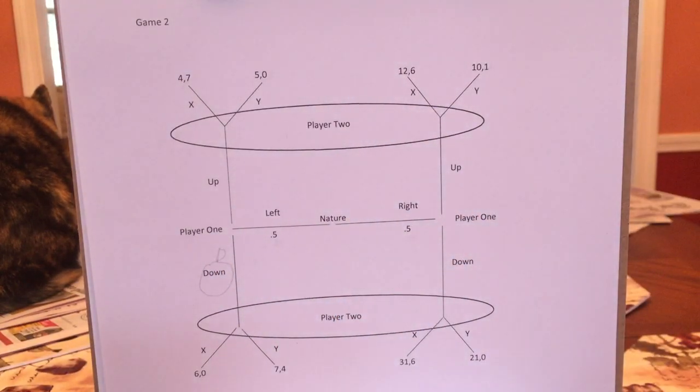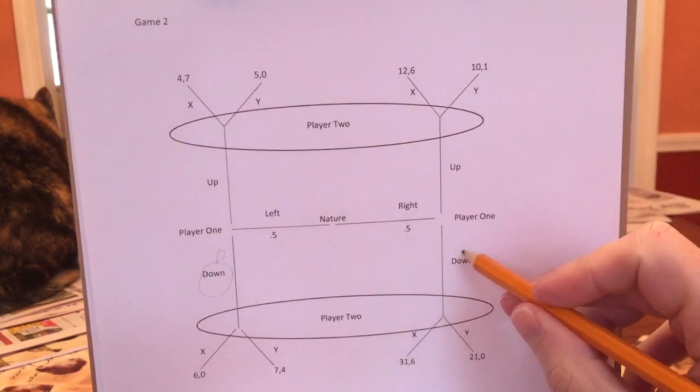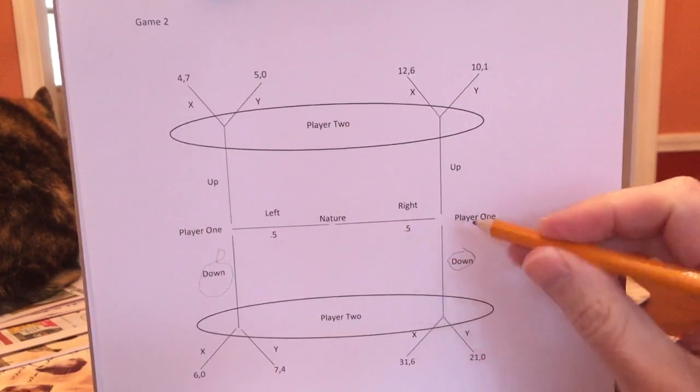Now you're Player 1 and you're a righty. Well, up gives you 12 or 10. Down gives you 31 or 21. Again, no matter what Player 2 might do, you are better off going down. So down is a dominant strategy.